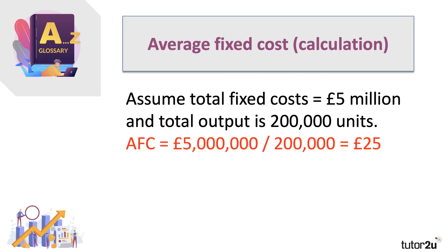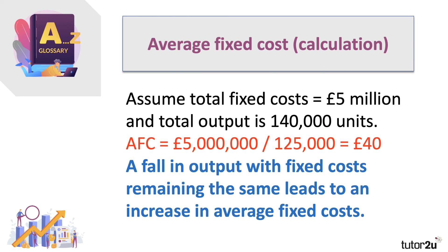A little numerical example: assume a business has fixed costs of £5 million. Those costs don't change with output. So if output is 200,000 units, we divide 5 million by 200,000 and get a fixed cost per unit of £25. But of course, if output goes down — the number of people using hotel rooms goes down, or the number of customers in the restaurant falls — many of those fixed costs remain the same. Therefore, if output is lower, the fixed cost per unit goes up. If output is 125,000 units, divide 5 million by 125,000 and you get £40. A fall in output with fixed costs remaining the same leads to an increase in average fixed cost.